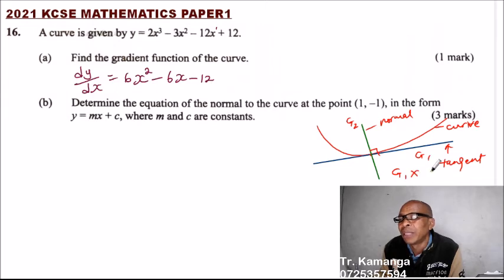So gradient of line one times gradient of line two should give you minus one. So that knowledge should be able to help you to solve this.